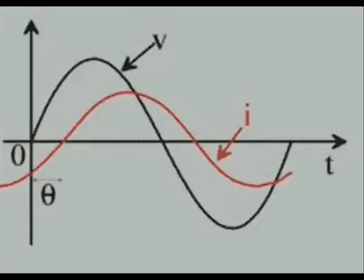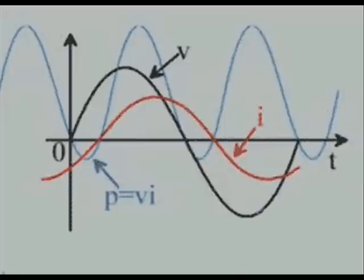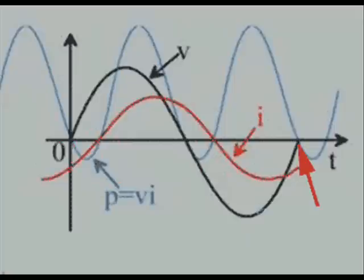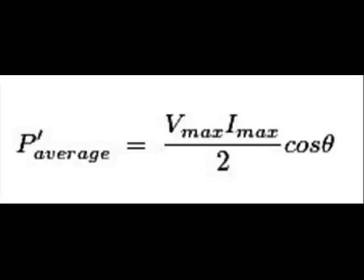Now let's plot this expression of the power waveform along with the voltage and current waveforms in the same figure. Here you see, the power waveform has a negative part. Now let's find the average value of this power by integrating from 0 to 2π and dividing by 2π. This will ultimately come as Vmax·Imax/2·cos(θ).